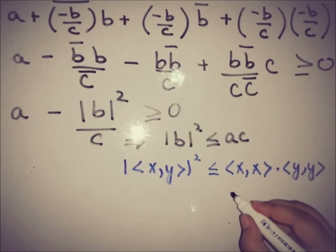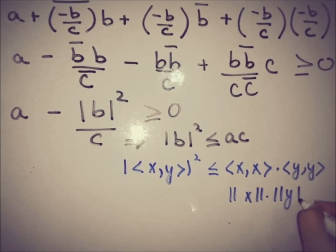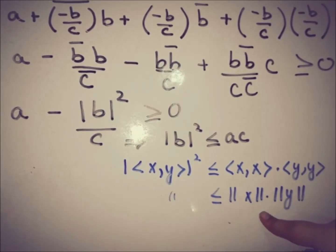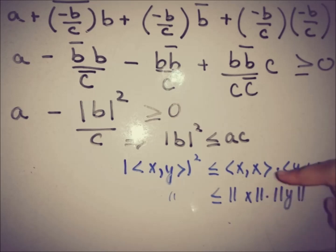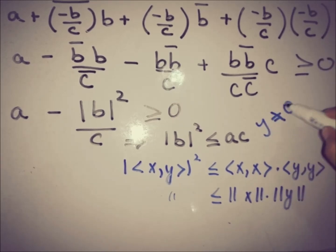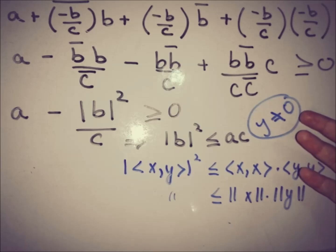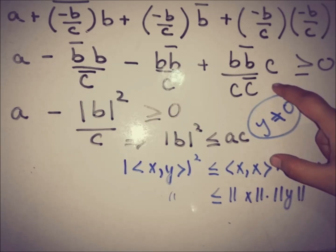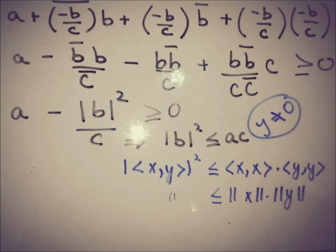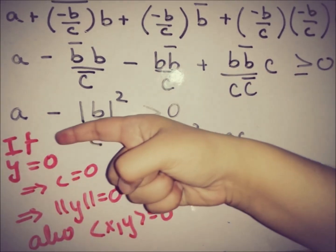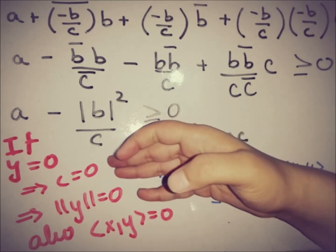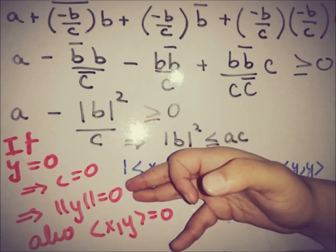We can write this as the norm of x squared times the norm of y squared, so |⟨x, y⟩| ≤ ‖x‖·‖y‖. This is what we had to prove — this is the Cauchy-Schwarz inequality, proved under the assumption that y is not equal to zero.